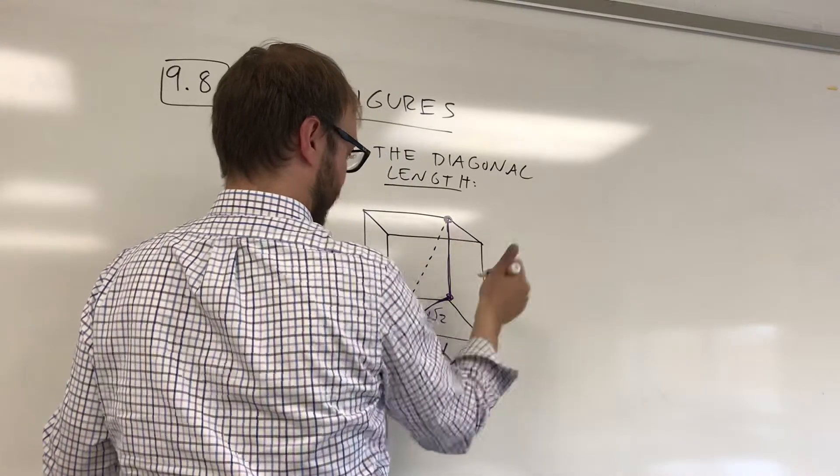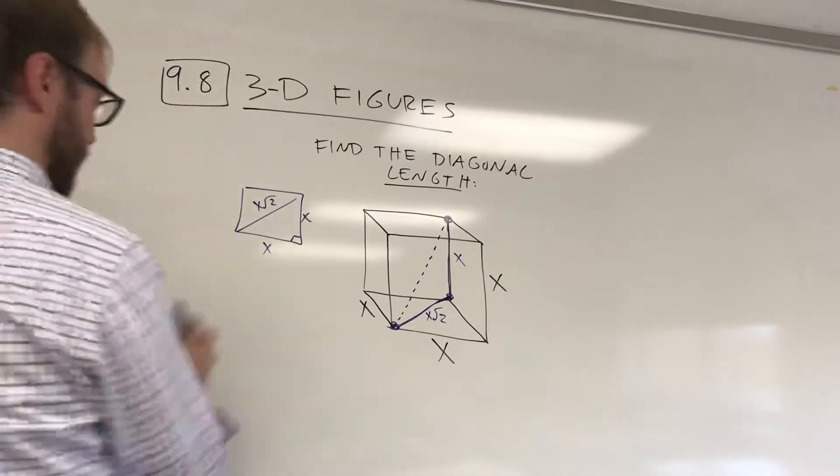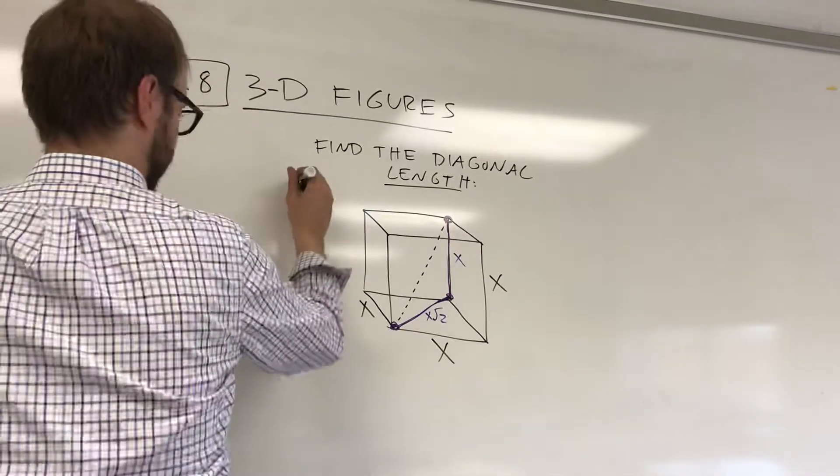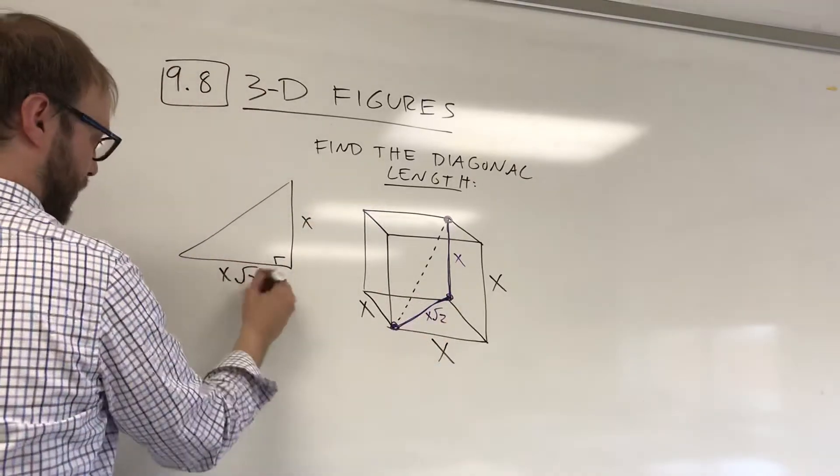This side is x, meaning that side is also going to be x. So, to prove this, or to come up with a formula for this, what we really have here is that inner right triangle. We have a height of x, and we have a diagonal of x radical 2.